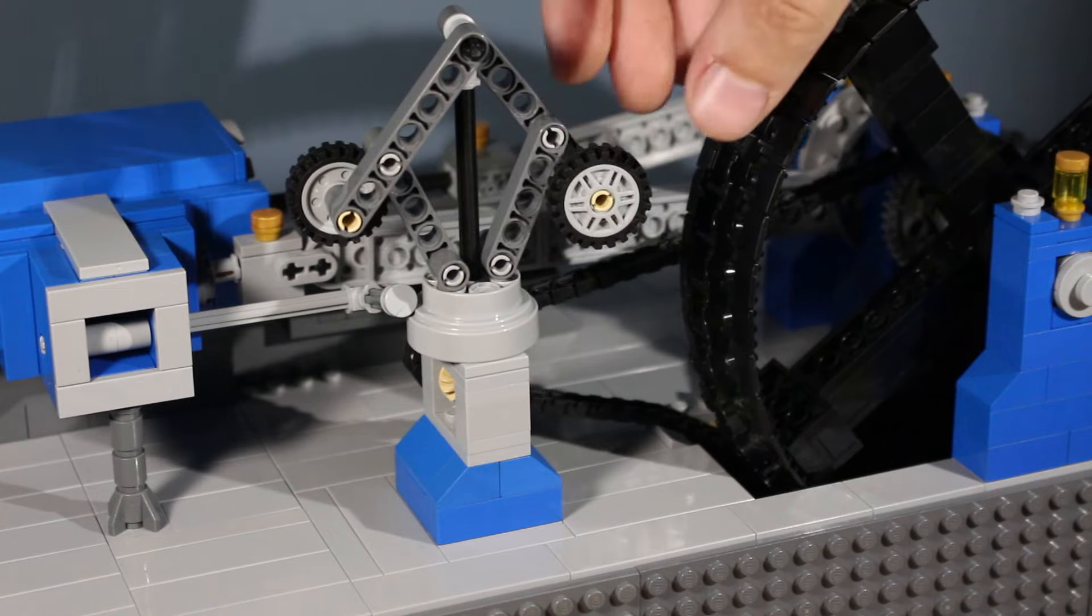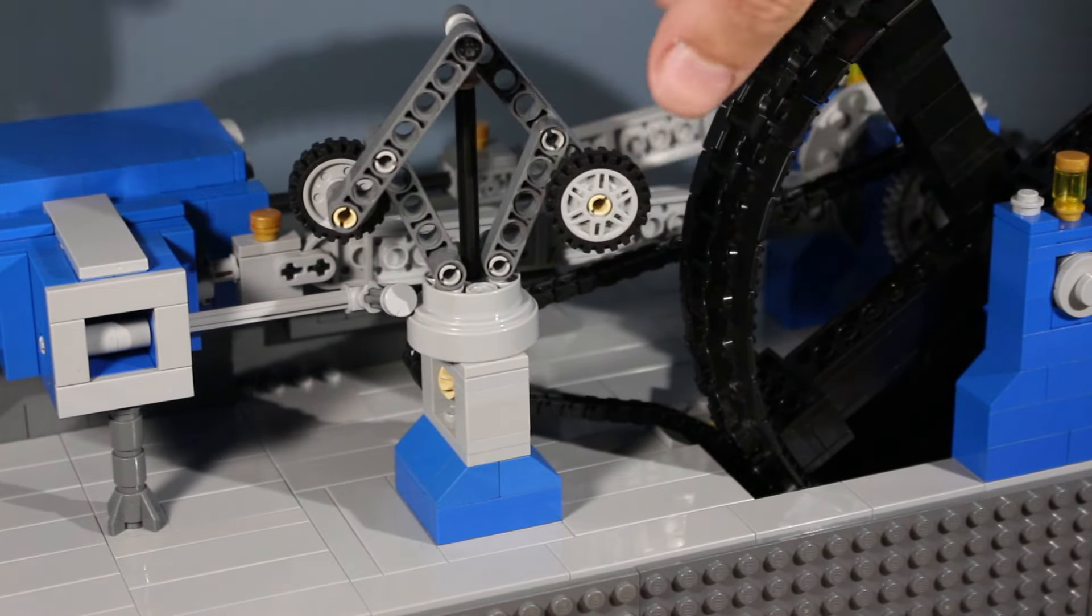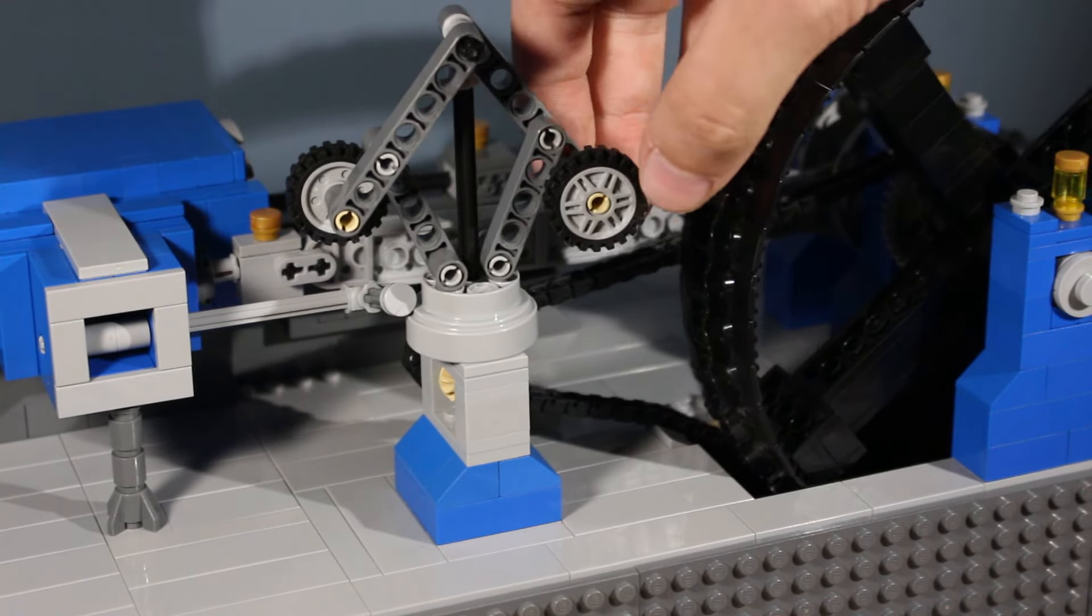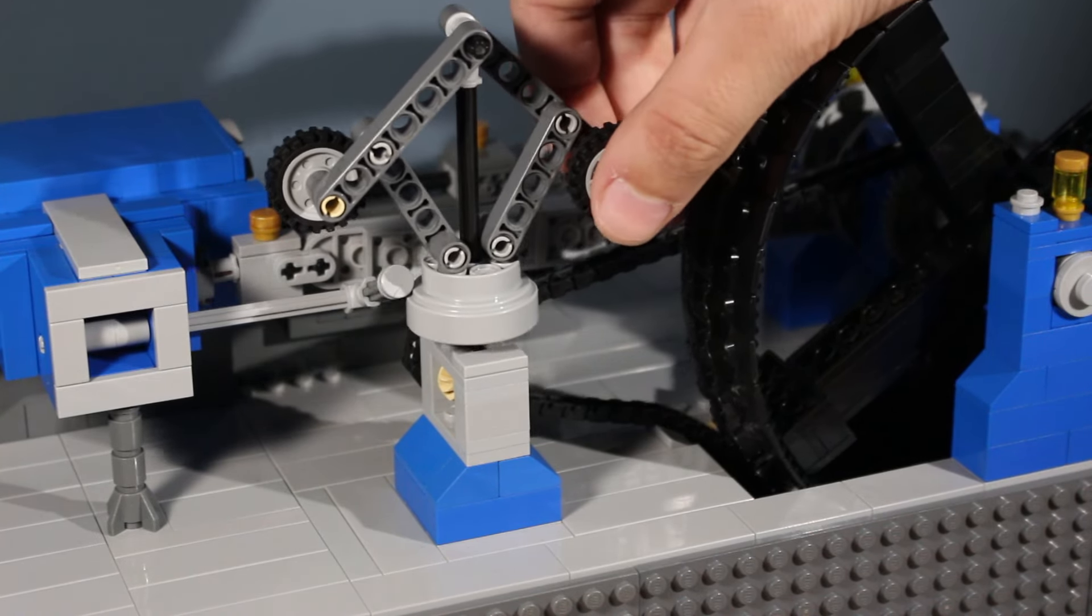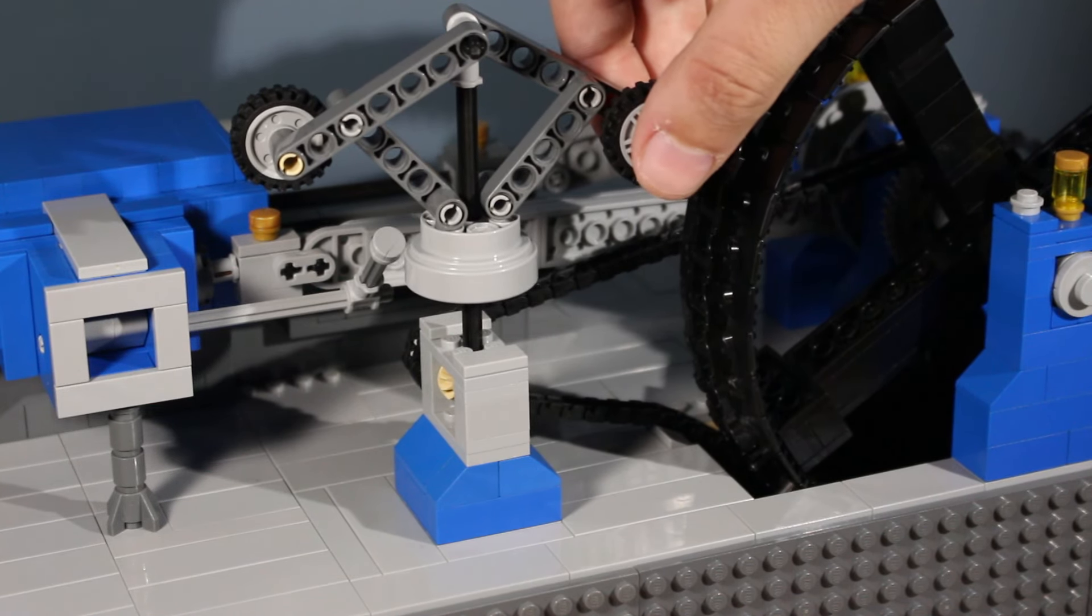When the engine speeds up, these weights will fly out. When they fly out, they lift up on the small platform here, which is connected to a valve on the steam input. As the engine speeds up, the valve will slowly close, cutting off more and more steam, which will slow the engine down.